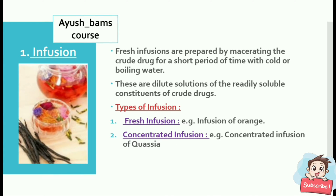The first method is infusion. Fresh infusions are prepared by macerating a crude drug for a short period of time with cold or boiling water. These are dilute solutions of the readily soluble constituents of crude drugs. There are two types: fresh infusion, for example infusion of orange, and concentrated infusion, for example concentrated infusion of senna.